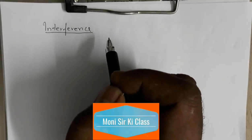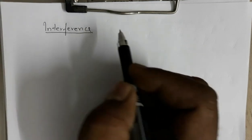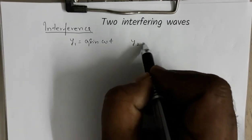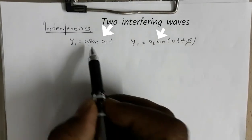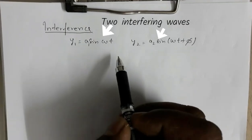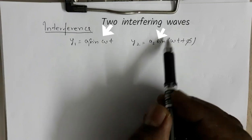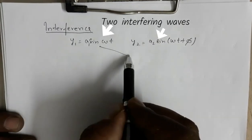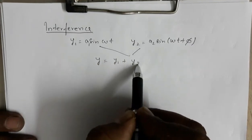In this video we are going to get a quick review on two topics: one is interference, the other is Young's double slit experiment. y1 is equal to a1 sin(ωt) and y2 is equal to a2 sin(ωt + φ). Here a1 and a2 are the amplitudes; ωt is the phase of the first wave and ωt + φ is the phase of the second wave, so φ is the phase difference. On superposition we get the resultant wave y equal to y1 plus y2.